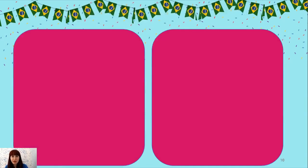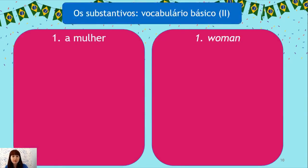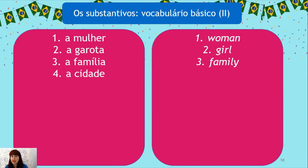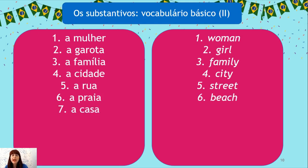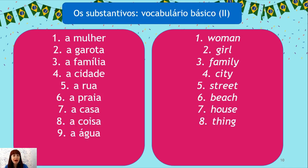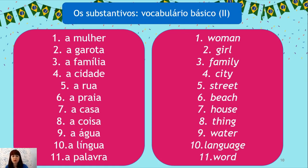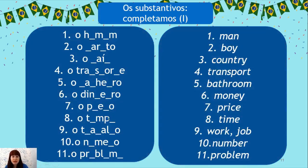Now, os substantivos femininos: A mulher, a garota, a família, a cidade, a rua, a praia, a casa, a coisa, a água, a língua, a palavra. As warned, many feminine nouns have the ending A — but not all nouns ending in A are feminine, as with O problema. Please do the exercises; they will help you understand everything better.